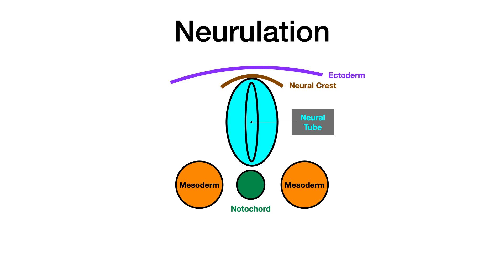On your exams, neurulation is really the meat of all your questions. If they're going to ask you a straightforward question about embryology in terms of how these things are folding and moving, it's probably going to be about neurulation. What becomes really high yield is not only knowing how neurulation works — the neural ectoderm giving rise to the neural crest and the neural tube — but also the pathology that can occur if this doesn't happen the way it's supposed to.